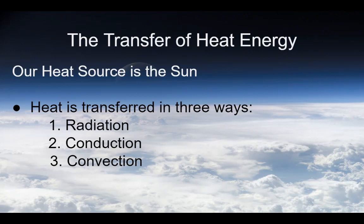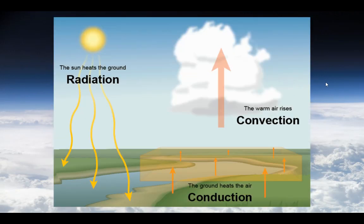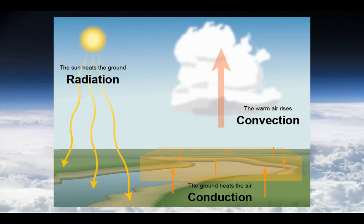There are different ways heat can be transferred through the atmosphere. The main heat source is the sun. Heat is transferred in three ways: radiation, conduction, and convection. Radiation is the transfer of energy through space — ultraviolet radiation from the sun that can transfer through a vacuum. Conduction is the transfer of energy from one substance to another. Convection is the transfer of energy in a fluid convection current — warm air rising and eventually sinking again. We'll talk more about rising and sinking when we get into the different wind belts around the globe.